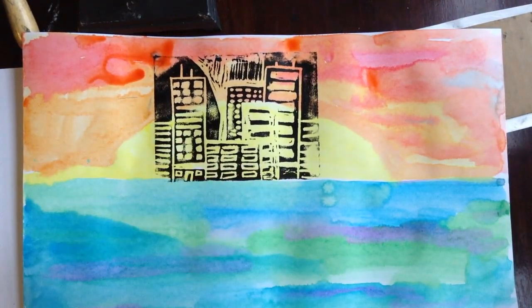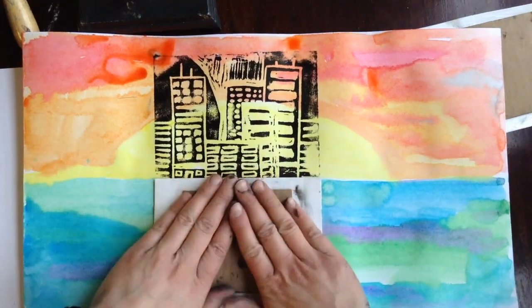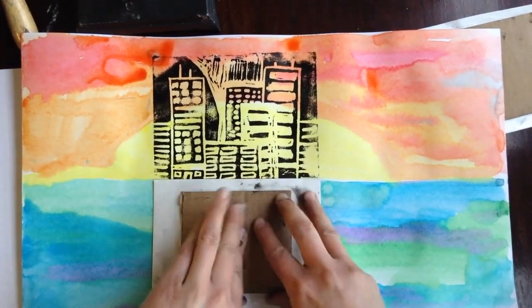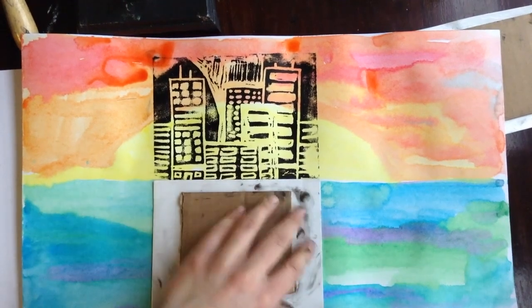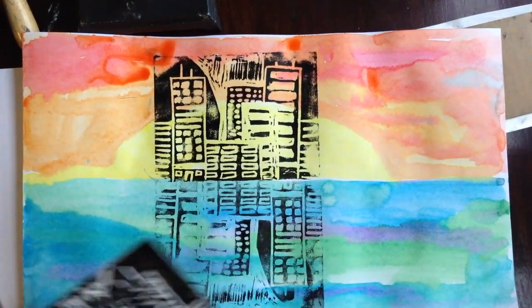Then, for the second print, it's called a ghost print. So flip it back over the second print without inking. Pull it back up. So it's kind of a little bit of a faded one.